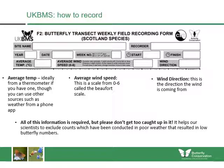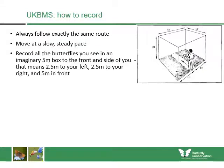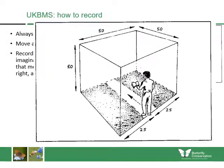All this information is required but please don't get too caught up in it — it just helps our scientists exclude counts conducted in poor weather that resulted in low butterfly numbers. Being off by a degree or two or not having an exact Beaufort scale reading doesn't matter too much. When recording, always follow exactly the same route at a slow and steady pace, recording all butterflies you see in an imaginary five-meter box to the front and sides — two and a half meters to your left, two and a half meters to your right, and five meters in front.